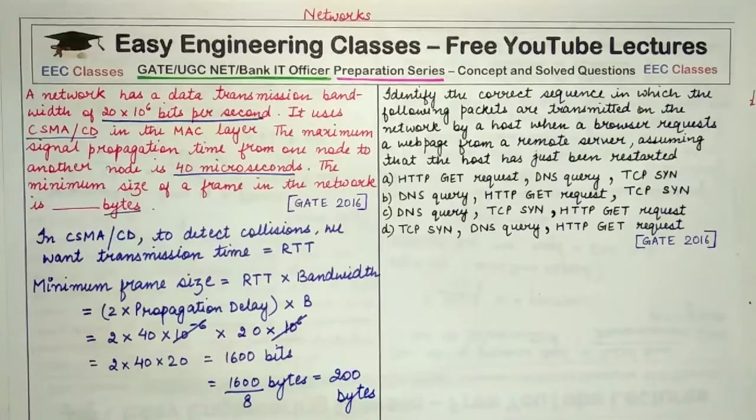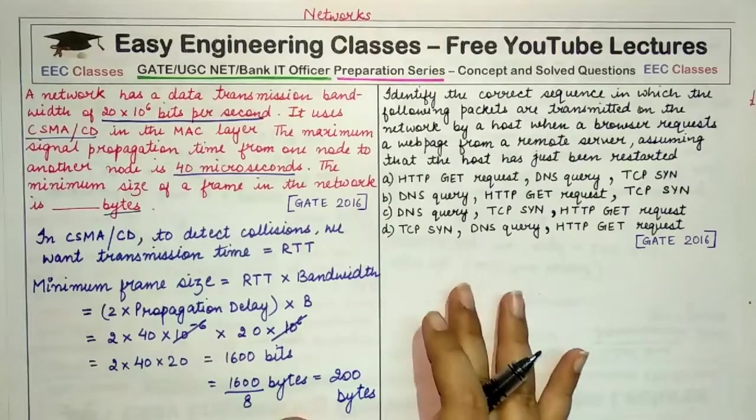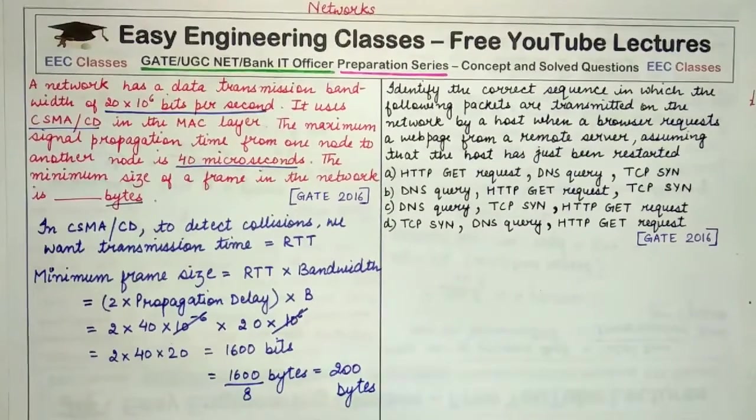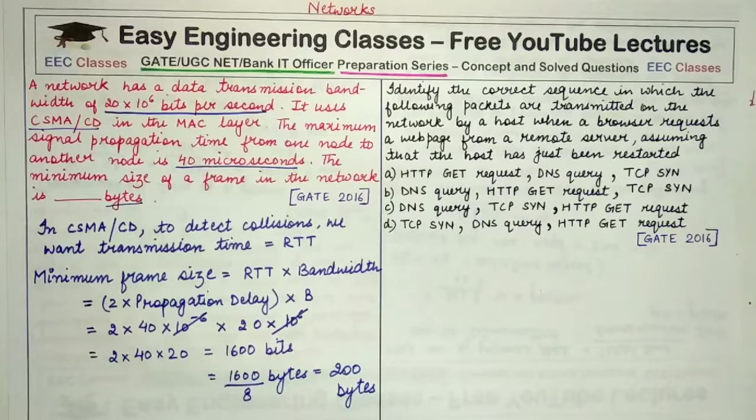So this was a very easy question if you remember what is CSMA/CD and what relation holds between transmission time and the round trip time. Coming to the second question, we have to identify the correct sequence in which the following packets are transmitted on the network by a host when a browser requests a web page from a remote server, assuming that the host has just been restarted.